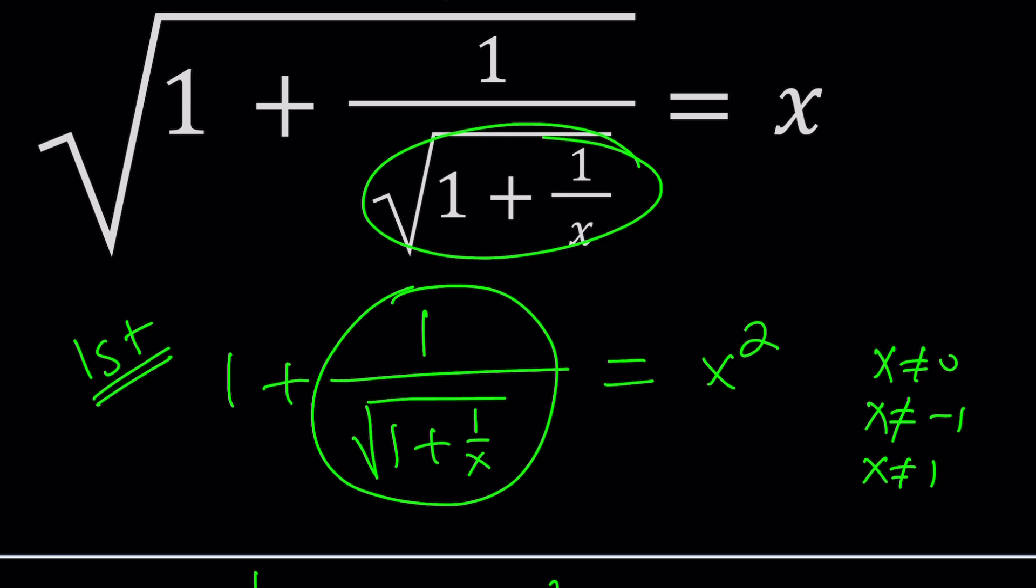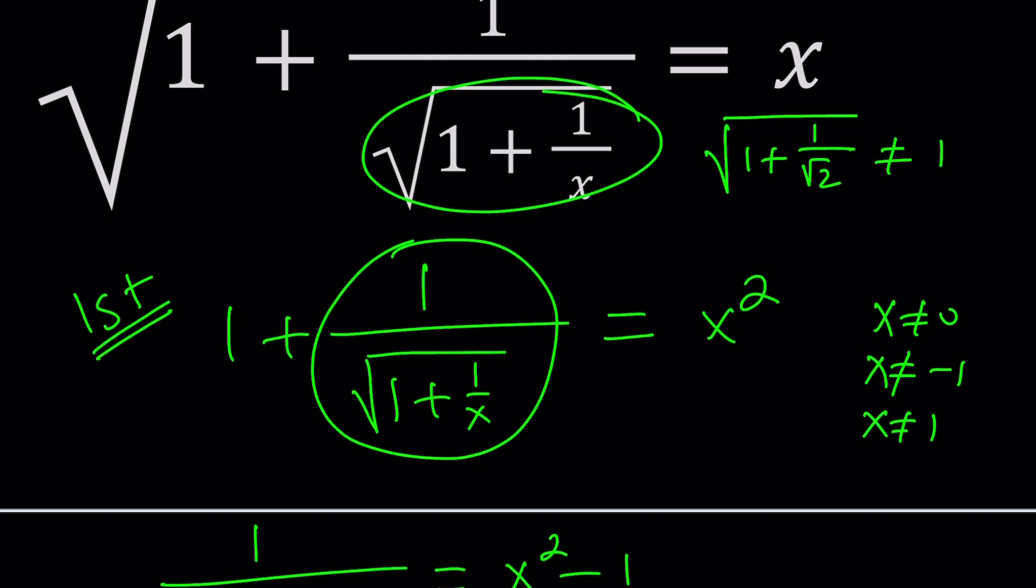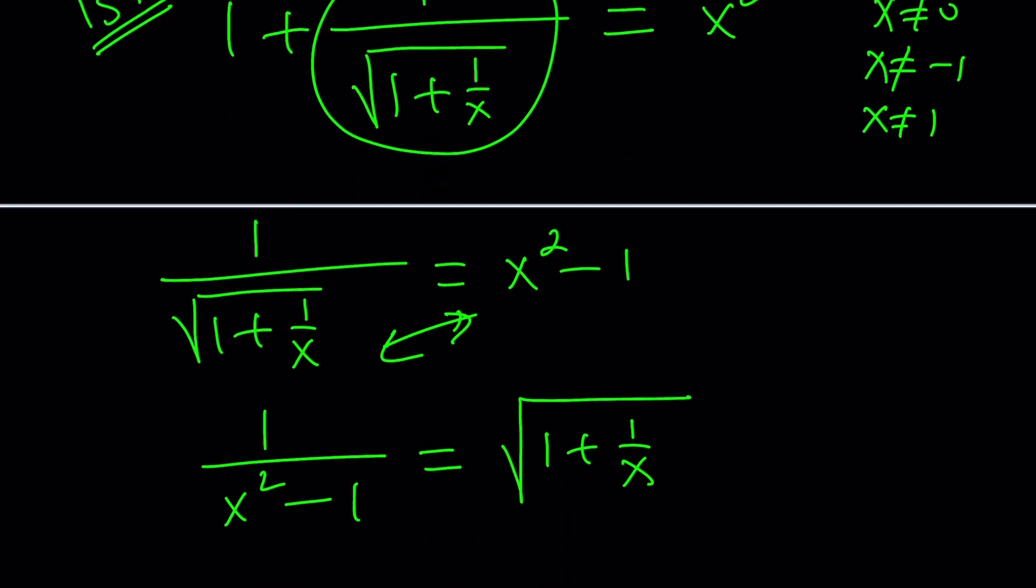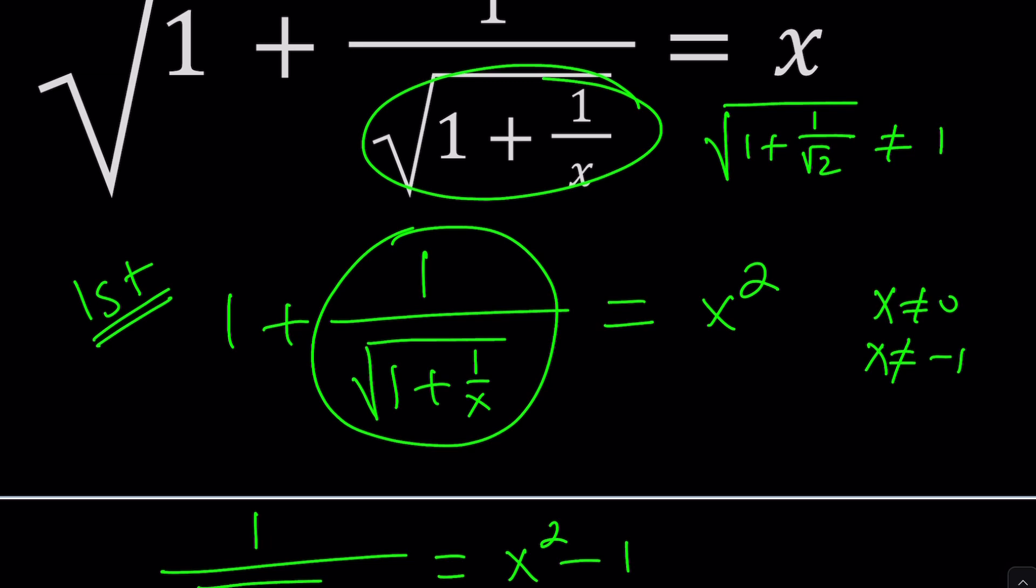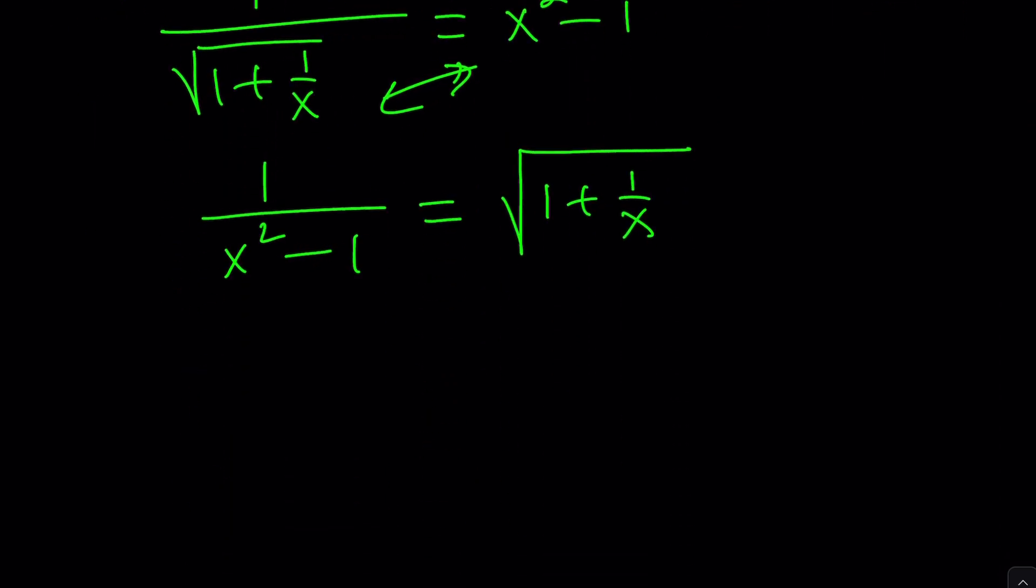If you plug in x equals one just for testing purposes, 1 plus 1 over, this is going to be 1 plus 1, so it's going to be the square root of 1, square root of 2, and obviously this is not equal to one. So x equals one is not a solution, but we excluded it, so we're good. We don't have to exclude it because we know it's not going to come up. So x cannot be zero, x cannot be negative one.